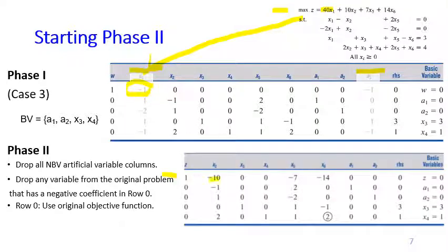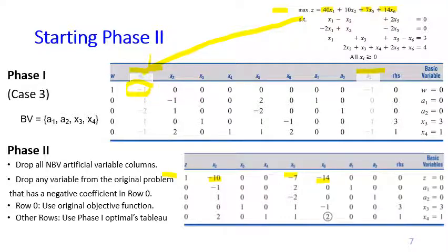For the phase two starting table we use the original objective function as row zero. Since x1 is dropped, we don't include it. The coefficient 10 for x2 becomes minus 10 because we move it to the left-hand side for row zero form. Similarly, 7x5 becomes minus 7 and 14x6 becomes minus 14. For the remaining rows in the phase two table, we simply copy what we have from the optimal table of phase one.